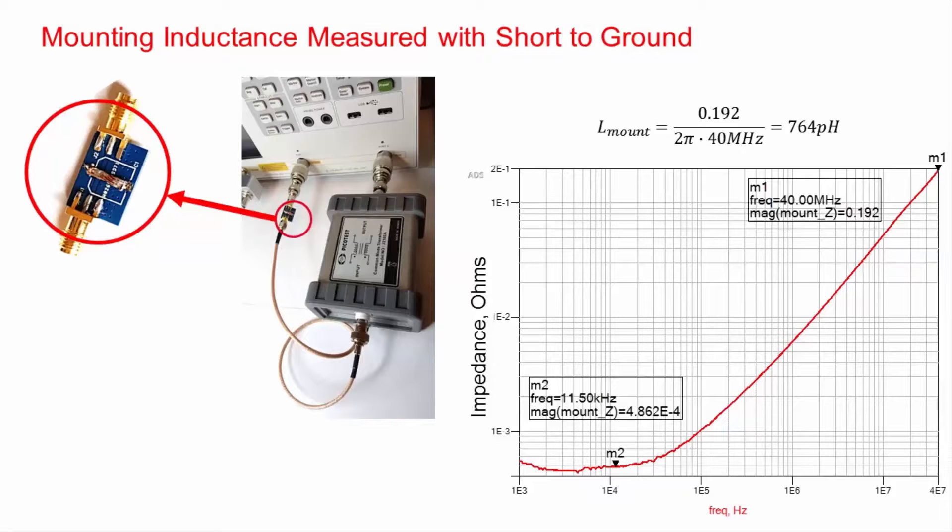The mount impedance is measured by shorting the capacitor pads on the printed circuit board mount. Remember that low-impedance, low-frequency measurements require the use of a coaxial transformer.